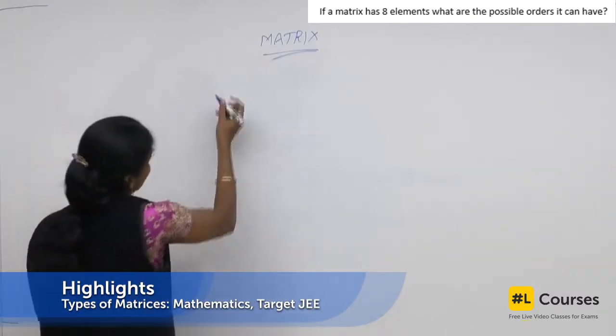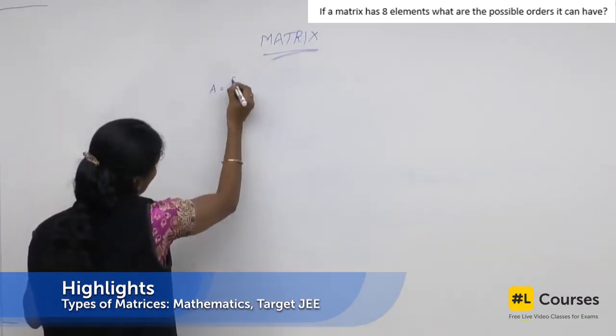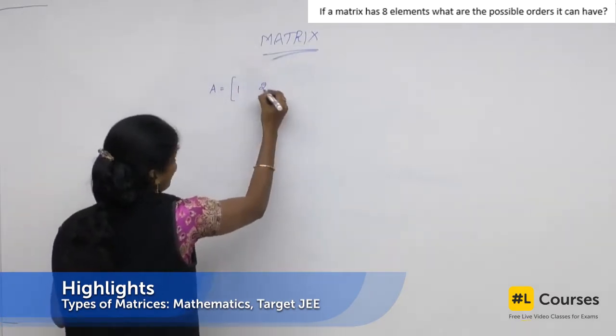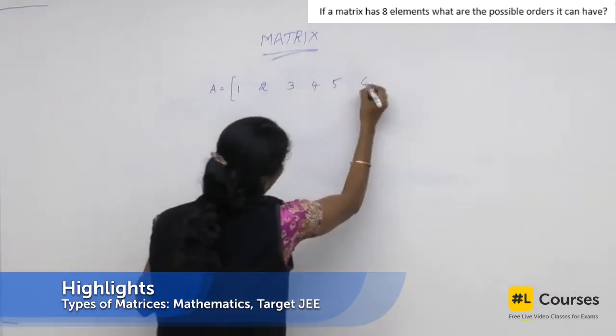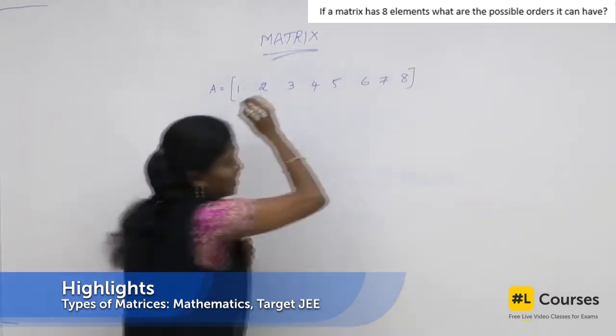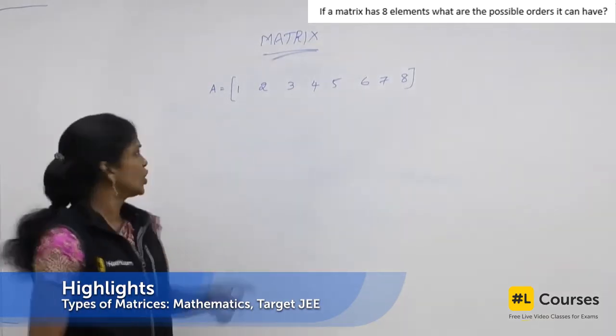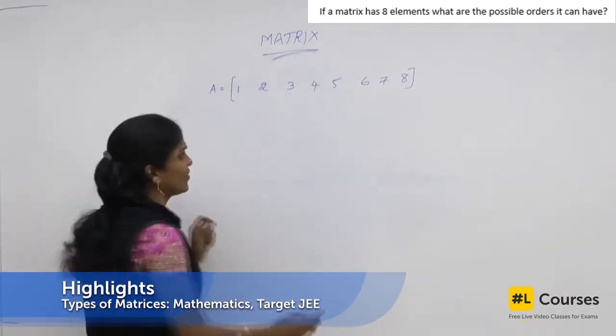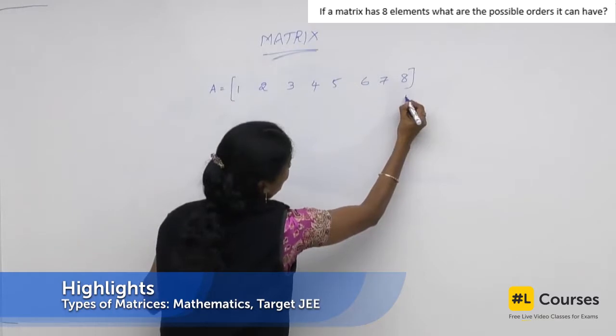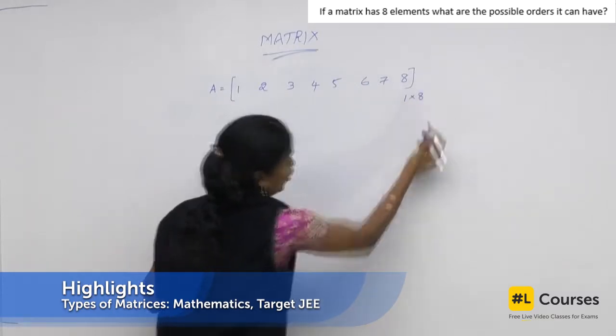Suppose, for example, just think that if I am giving 8 elements to you people, you will say, you are so lazy, what you will do? Ma'am, I will put all the elements in a single row. Isn't it? So, at that time, what is the order of the given question? So, the order of it is 1 row and 8 columns.